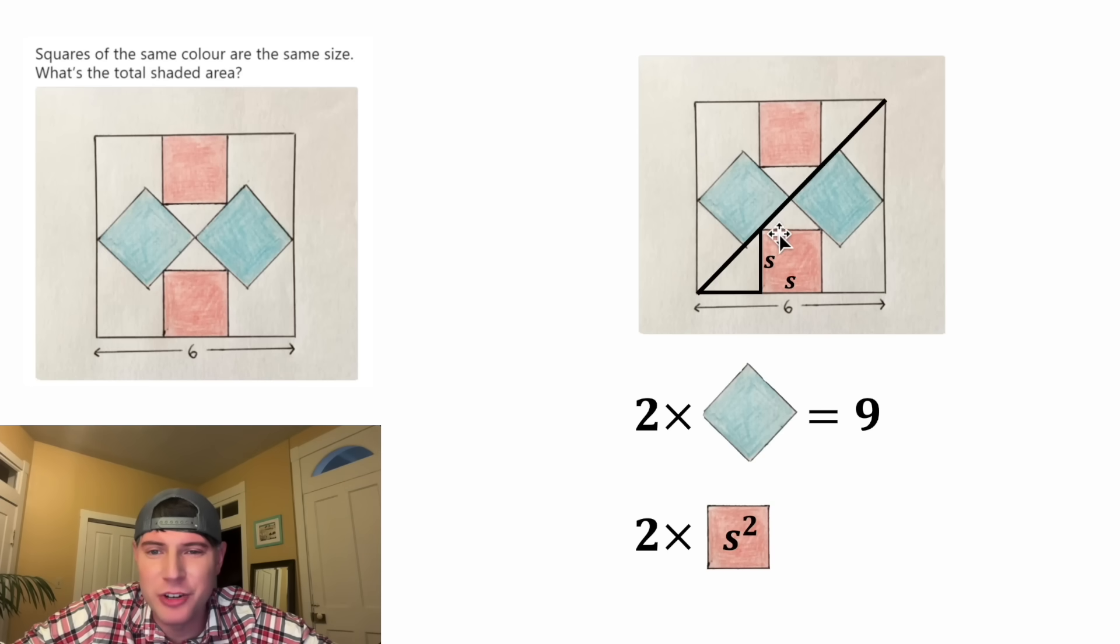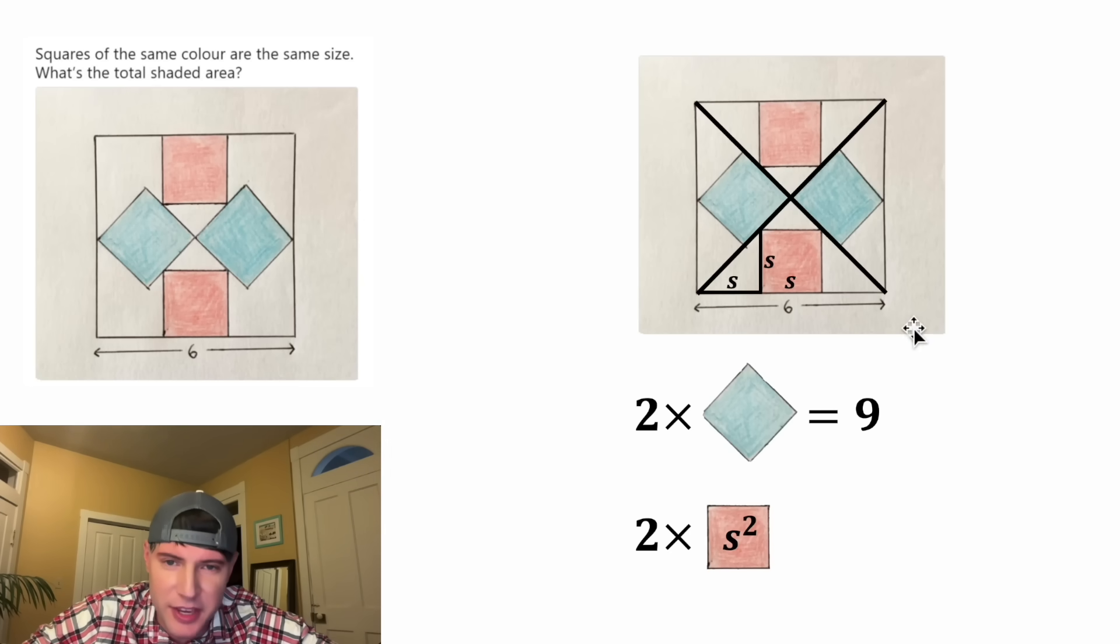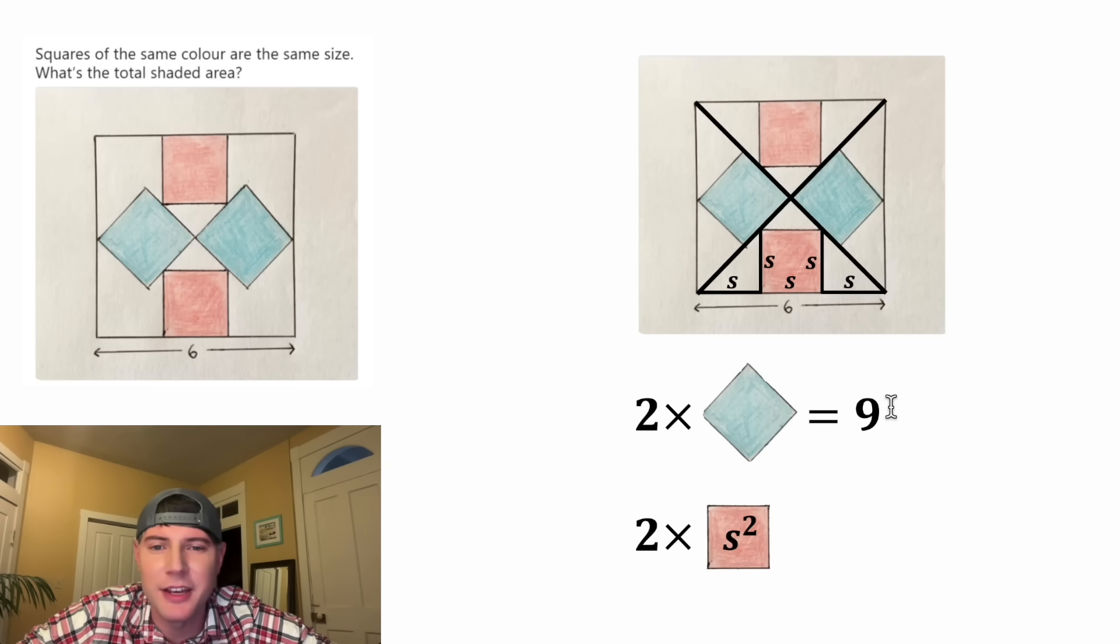In a 45-45-90 triangle, the legs are congruent. So this would also be equal to S. And then if we do the same thing for this diagonal and this side and this side, this will also be a 45-45-90 triangle with these sides equal to S.